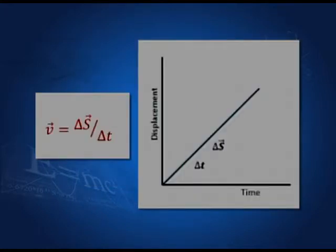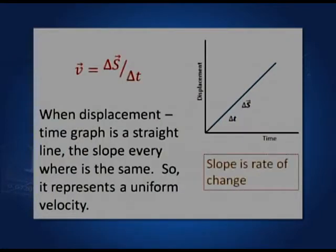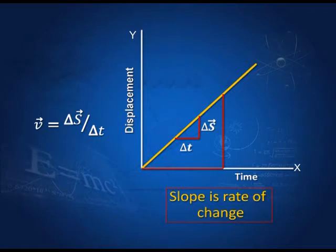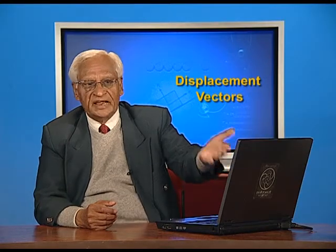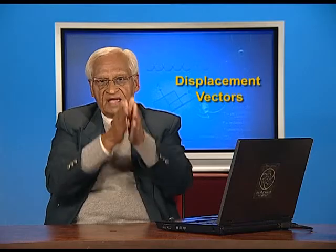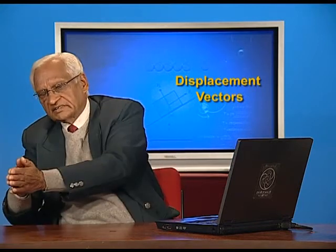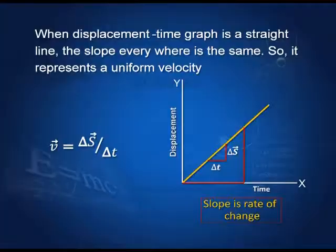I have drawn a graph with displacement vector on one side and time on the other side. If you remember your class 9 and 10 mathematics, the slope of this graph is the rate of change — in this case, the rate of change of displacement with time. You drop a perpendicular on the time axis and draw a line along the x-axis. This gives delta S and delta t, and the ratio delta S by delta t is the slope of the graph. Delta S by delta t is our velocity. So velocity is the slope of the displacement-time graph.